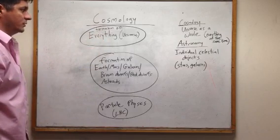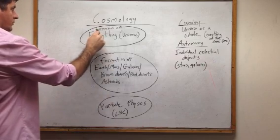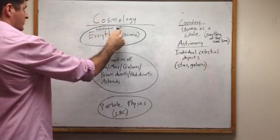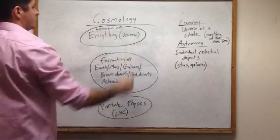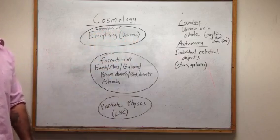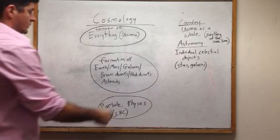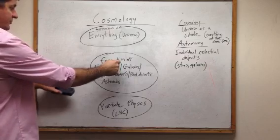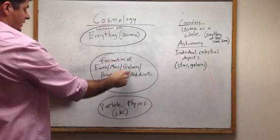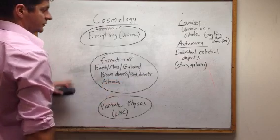People who do cosmology concern themselves with, essentially, the formation of everything, meaning the universe. Now you have the formation of Earth, Mars, galaxies, brown dwarfs, red dwarfs, asteroids.